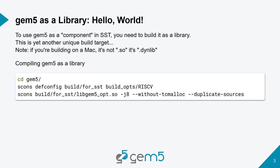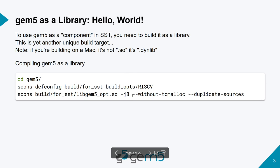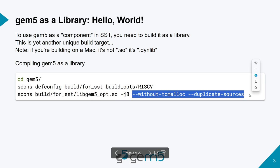One caveat when building GEM5 to use with SST or other simulators is you might need to build GEM5 as a library. SST loads in components dynamically as libraries. So instead of building GEM5.opt or GEM5.fast, this is building libgem5_opt, libgem5_fast, libgem5_debug, and then .so — note that it's .dynlib if you're on macOS. You also have to compile it without TCMalloc because SST doesn't know about TCMalloc, and duplicate_sources is another required parameter you have to add.